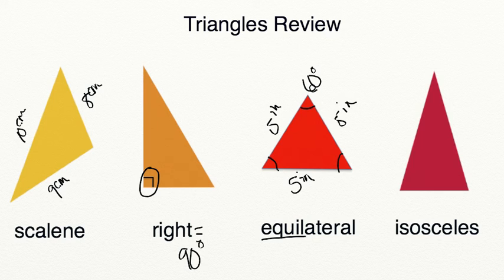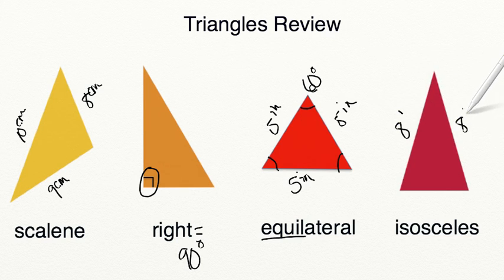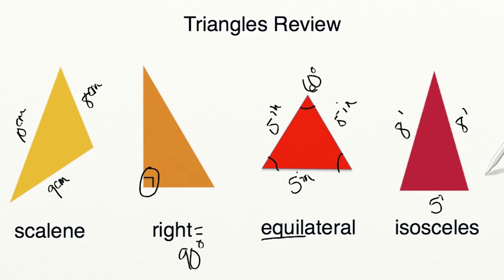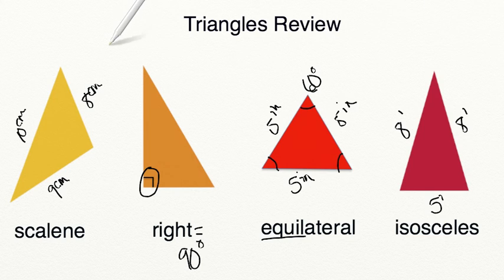Alright, let's take a look at our last triangle. This is an isosceles triangle. An isosceles triangle has two sides that are going to have the same lengths and one side that will have a different length. Likewise, it will have two angles that have the same measurement and one angle that does not. Are you noticing a trend? The number of sides that have the same length is the same as the number of angles that have the same measurement.